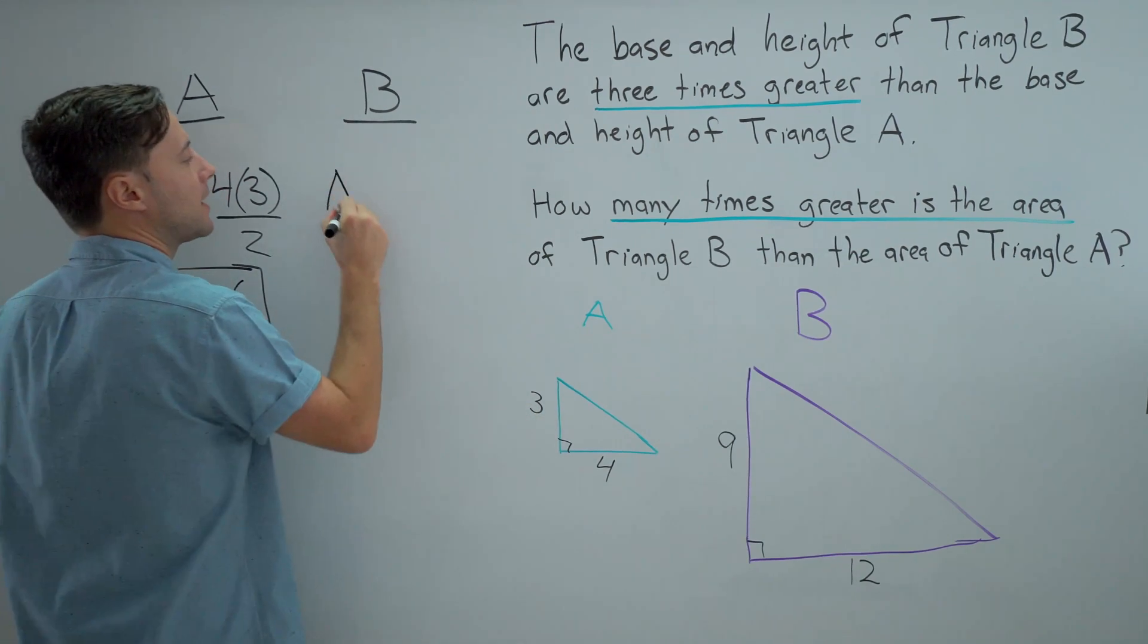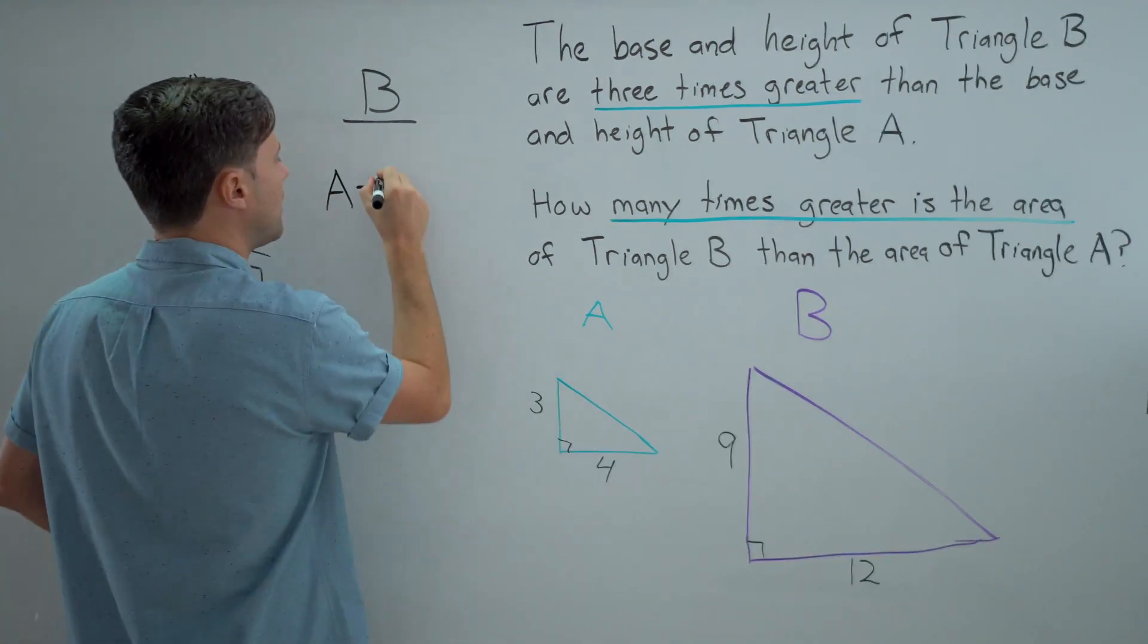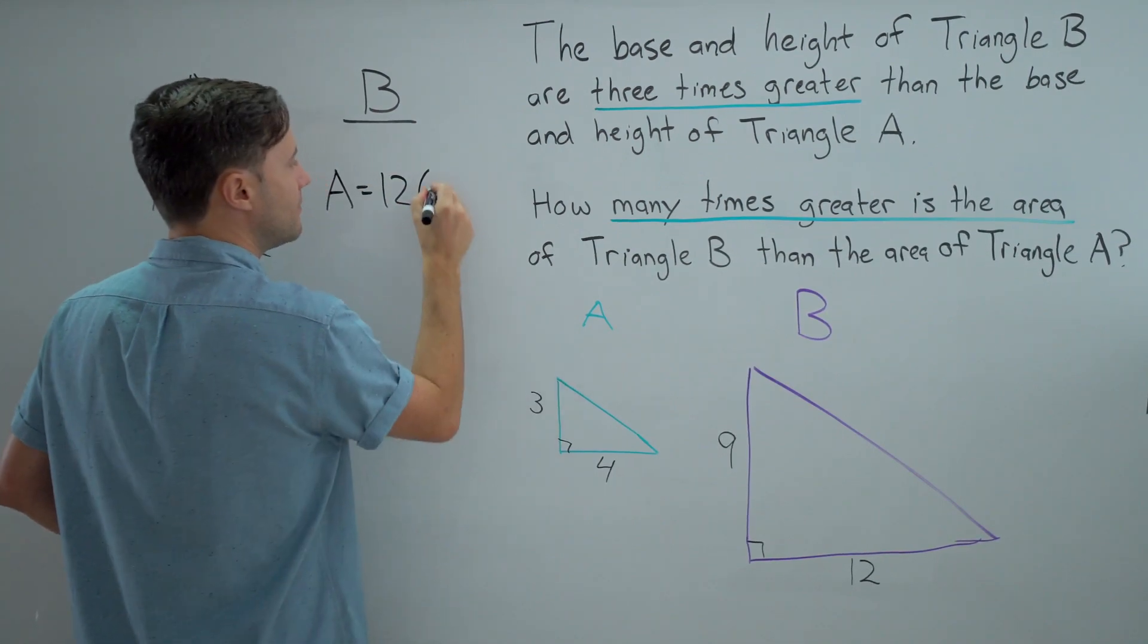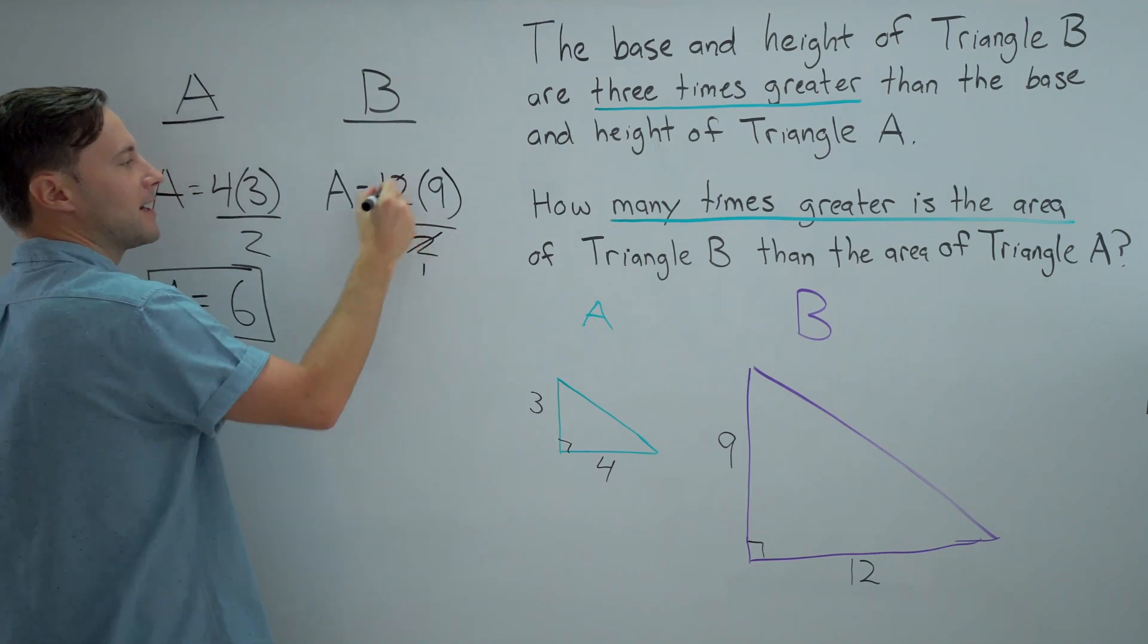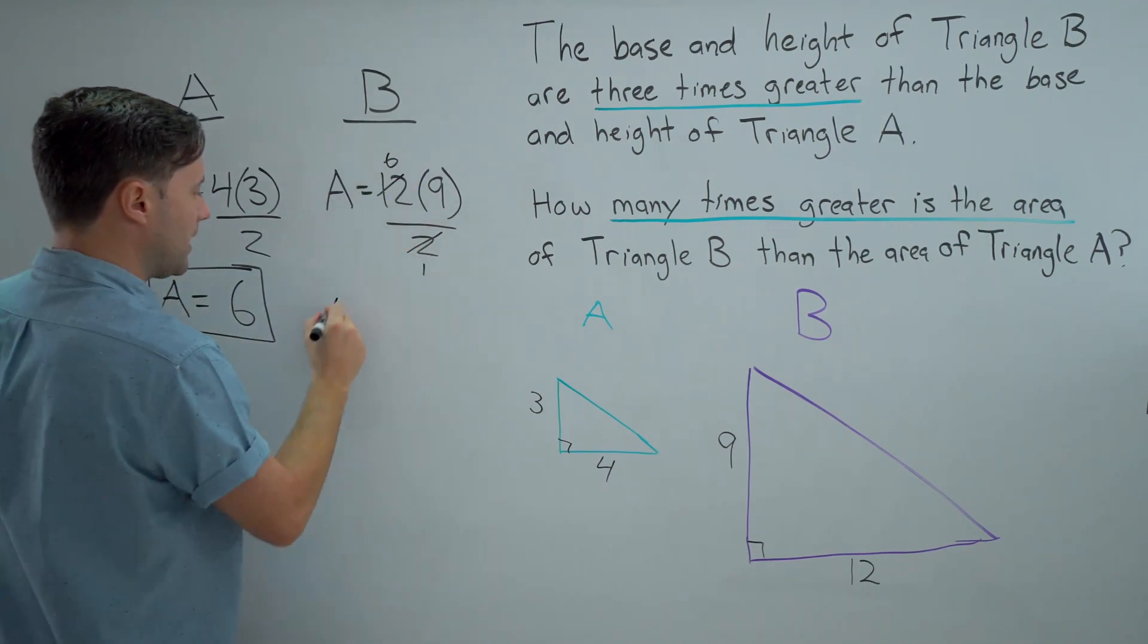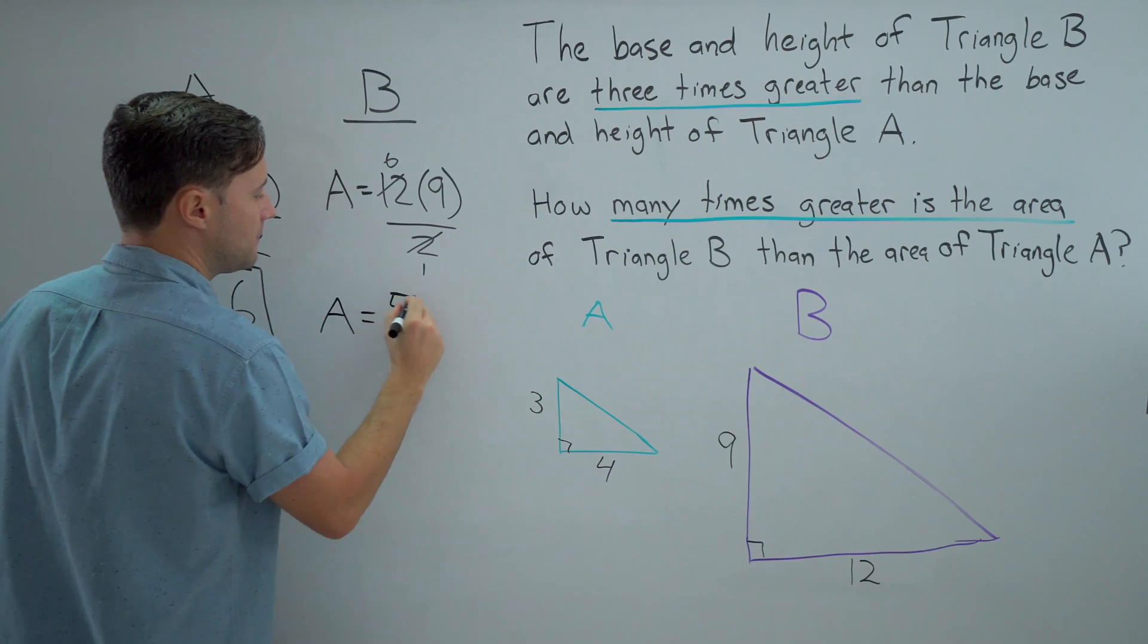How about for B? Well, we've got a base of 12 times a height of nine. Again, we've got to divide by two. I'm going to simplify this time. And we get the area is 54.